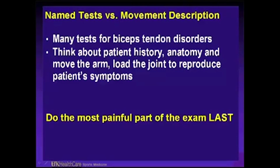For a biceps tendon proximal labral problem, we know from arthroscopies that if we externally rotate the arm — this is a peel-back — and the labrum, if it's torn, peels back, oftentimes with pain clinically into the biceps. Just like in McMurray's maneuver, axial loading and rotation will create pain. Do the most painful part of the exam last. You can predict which part this will be based on the patient's age and their sport.